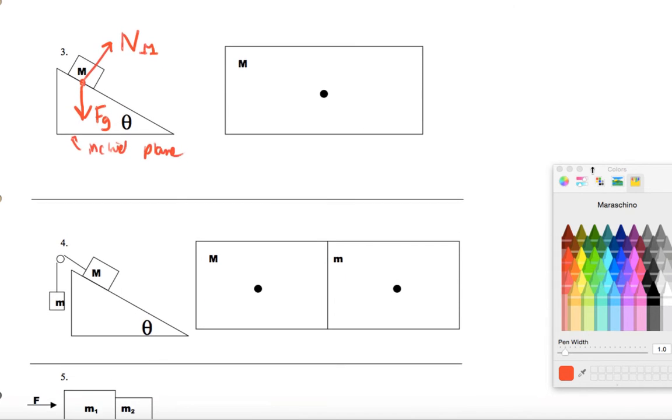Now, for here, let's do something similar. We're going to have little m, so I'll have tension going up and weight of little m going downwards.